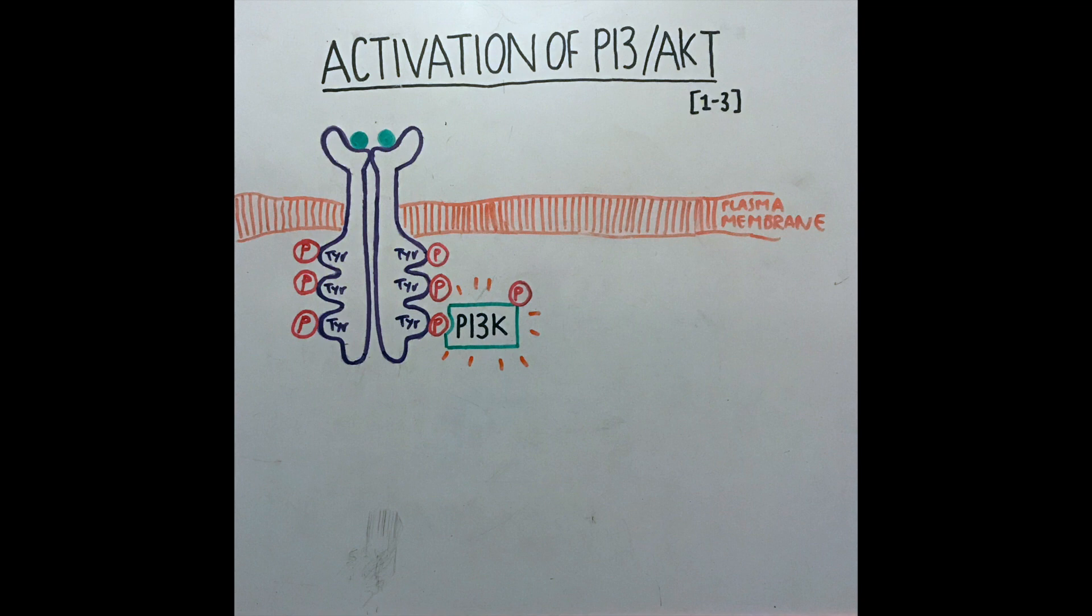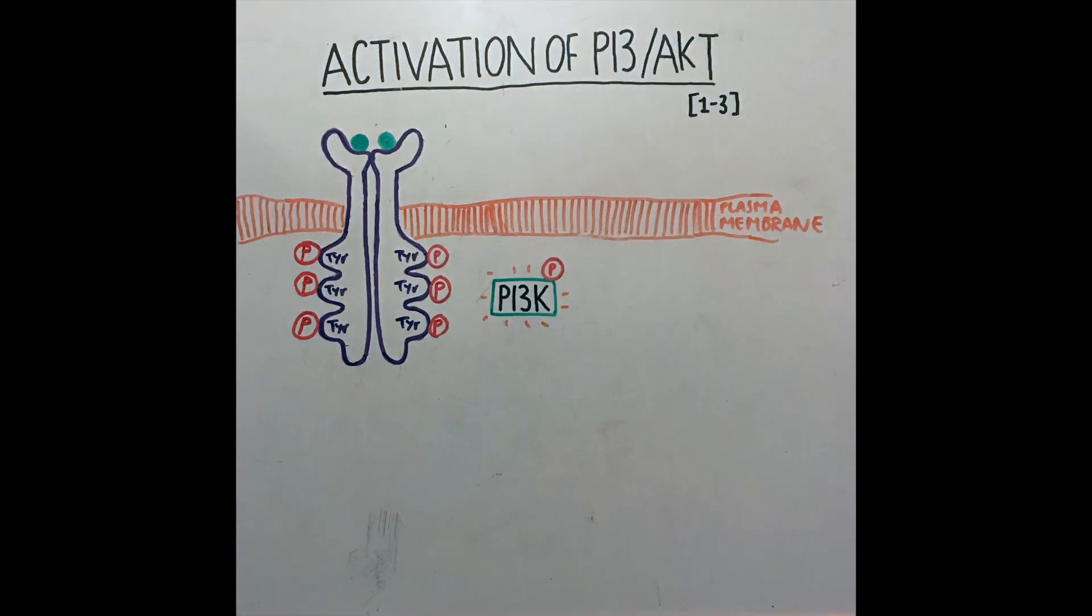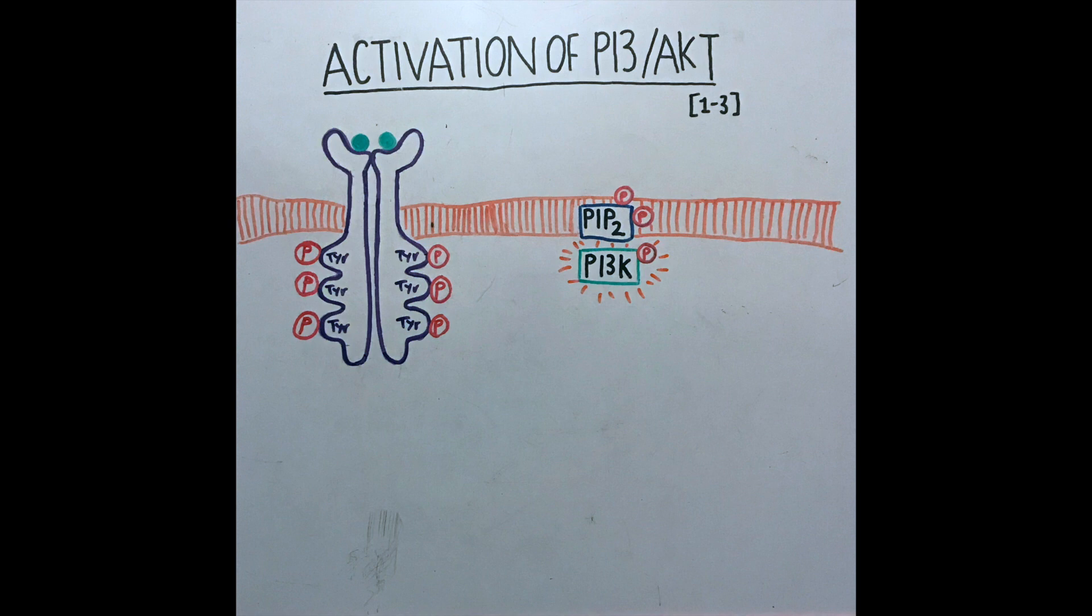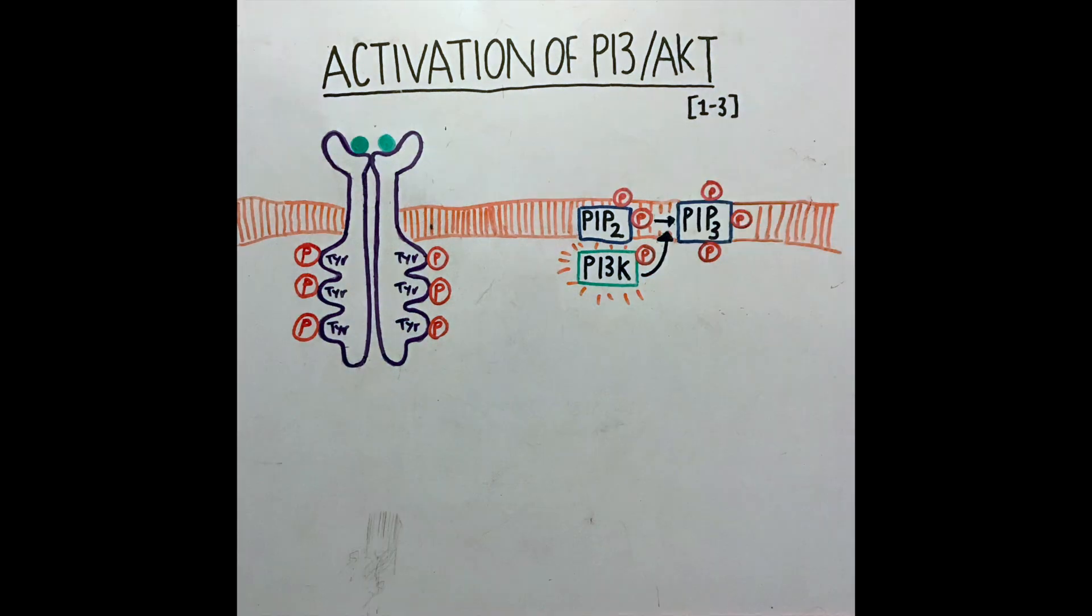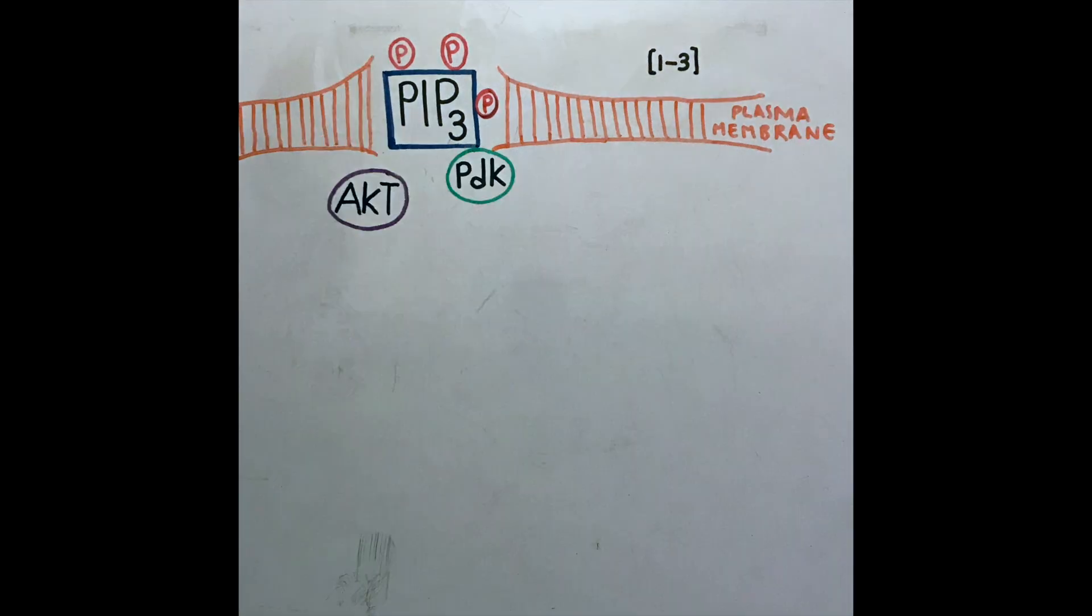The activated PI3 kinase travels to the plasma membrane where it phosphorylates membrane lipid PIP2 to PIP3. AKT and PDK bind to PIP3 due to having PH domains.